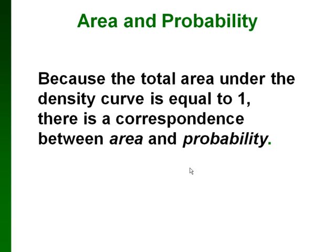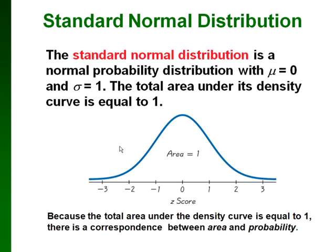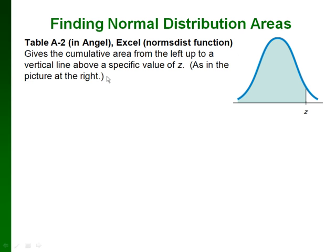There's a correspondence between the area under the curve and the probability. Here's our standard normal distribution curve — the area under the whole curve is equal to 1. So if we want to know the probability that a value is less than a certain number, we just look at how much of that area is taken up, and that gives us our probability. The probabilities and the areas are the same.